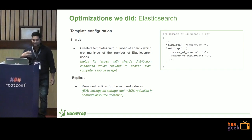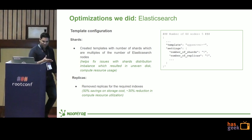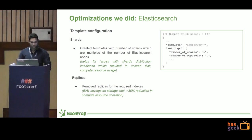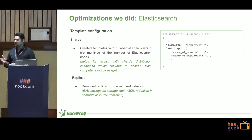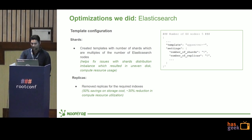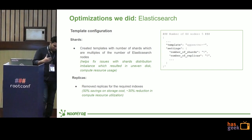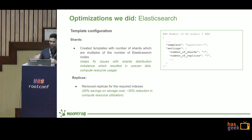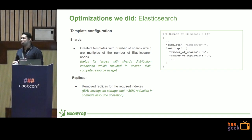We also took a more drastic action — we removed all replicas from our cluster. By doing this, we saved 50% on storage footprint, and there was also a 30% reduction in compute resource utilization (CPU, RAM). Of course, there are trade-offs: replicas are also used during searching, so you will see a slight degradation in search performance. Also, it's not recommended to run production clusters without replicas, but we have a disaster recovery mechanism in place which I will talk about in upcoming slides.